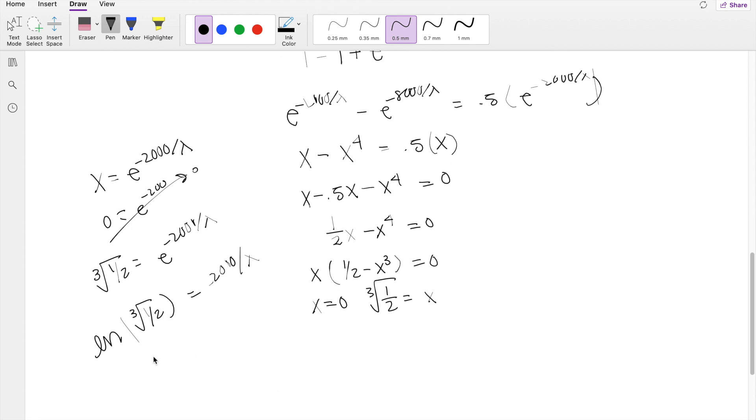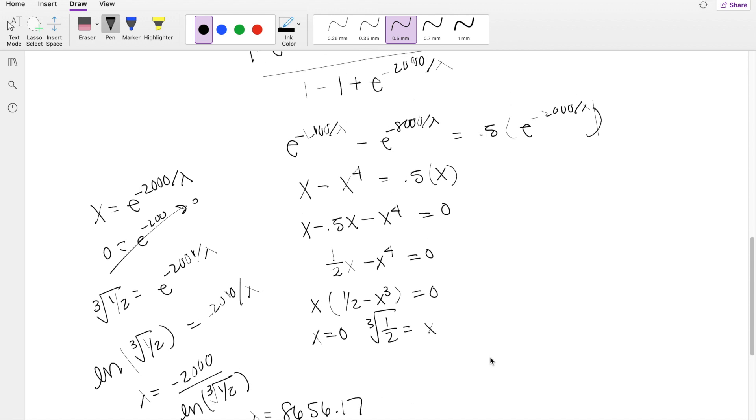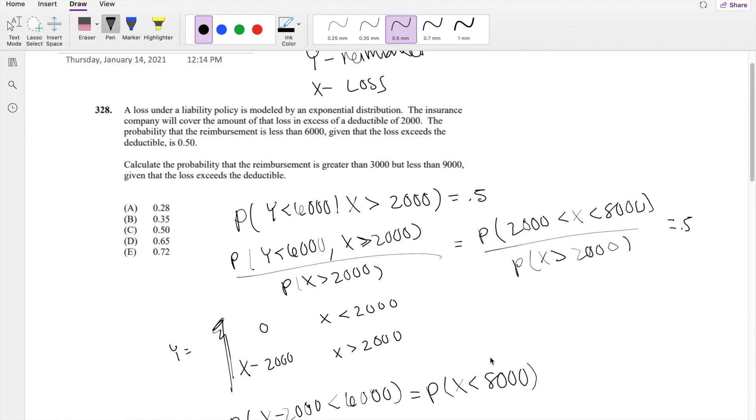Bring the lambda to the other side. I don't know why I'm writing so crooked, but it's okay. Lambda is equal to negative 2,000 divided by natural log of cube root one half. So then lambda here is equal to 8656.17. So now we can actually figure out what we're looking for.